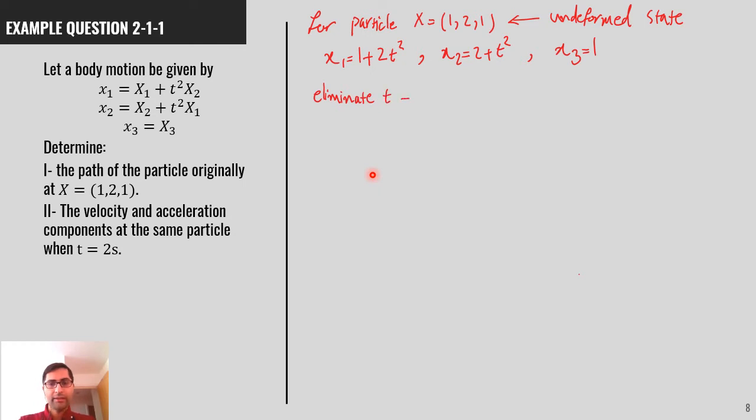Now, okay, let's eliminate t between these three relations to find the particle path. We get x1 minus 1 divided by 2 equal to x2 minus 2, and x3 is 1.